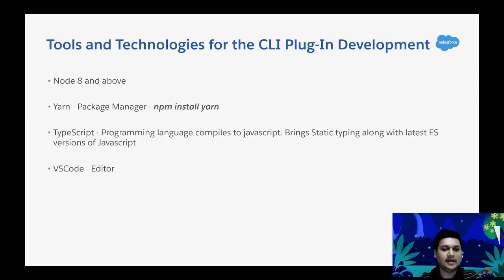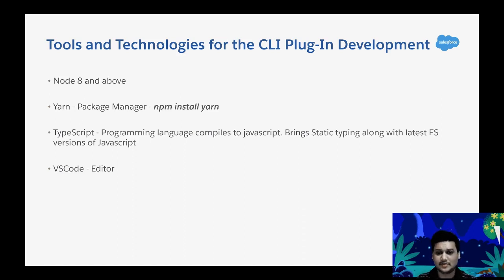Before getting into scaffolding, let's discuss the tools and technologies for CLI plugin development. You need to be familiar with Yarn or npm — Yarn is a package manager you can install using npm. You'll also need TypeScript, which brings static typing and the latest ES versions of JavaScript, and a good code editor like VS Code.